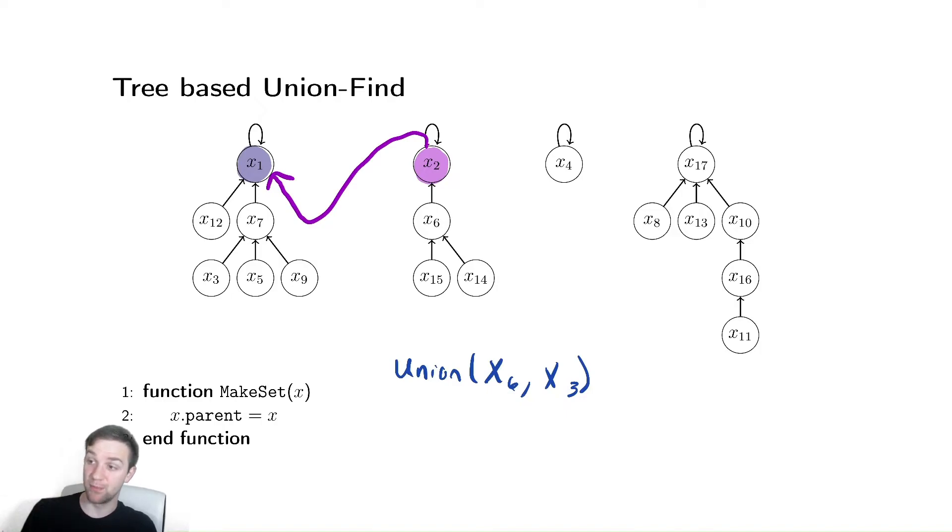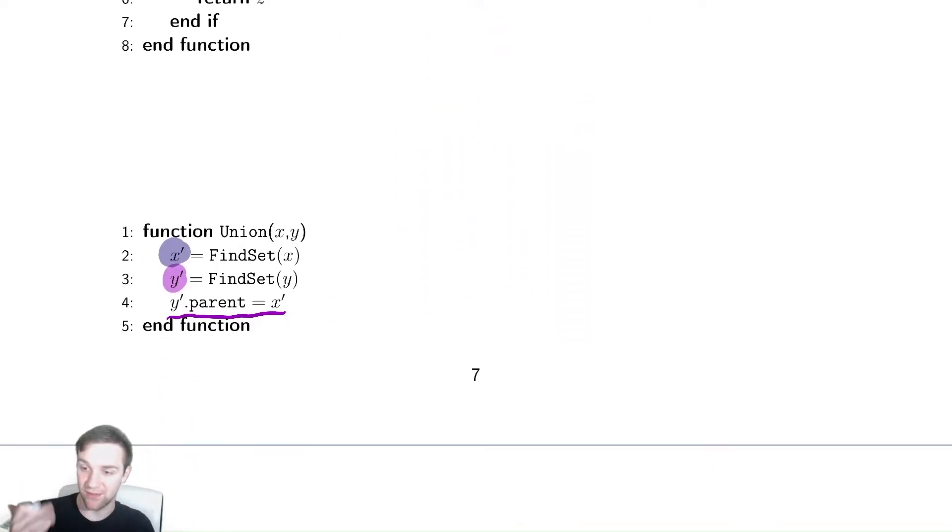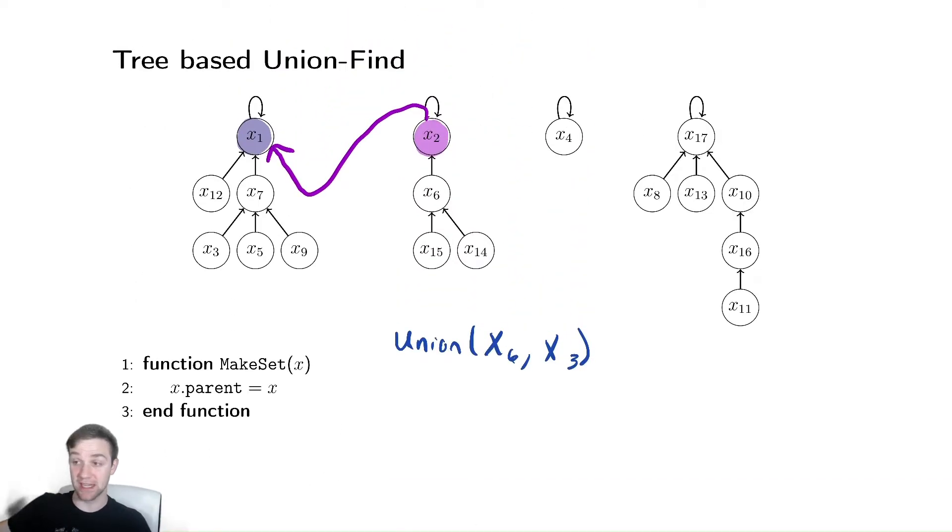An alternative approach would be to look at the height. And, in fact, if I'm looking at this method for find set and for union, which just depends on find set, the worst case for this is going to be the height of the tree that I am looking at.